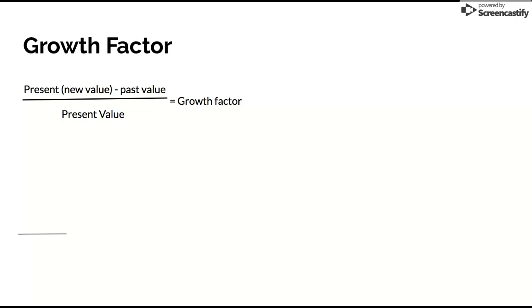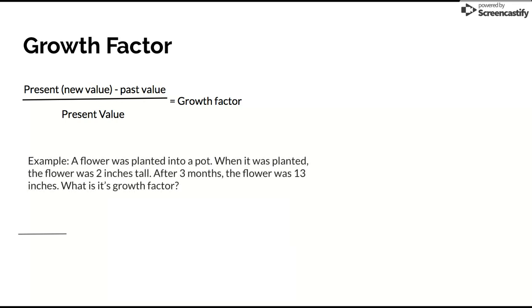Here's how to find the growth factors given numbers in a story problem. If you take the present or new value minus the past value over the present value, that gives you the growth factor. For example, a flower was planted into a pot. When it was planted, the flower was 2 inches tall.